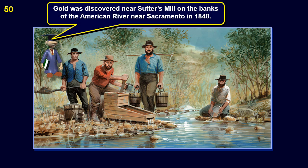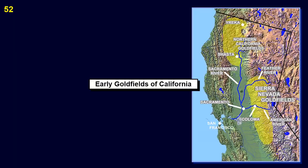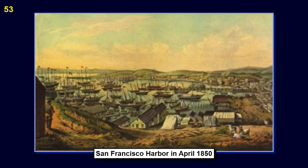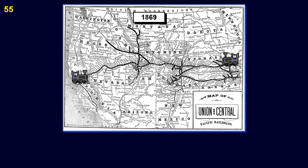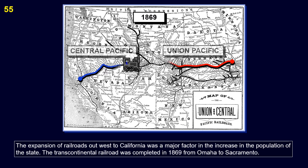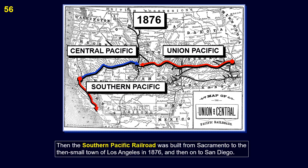Then gold. Gold was discovered near Sutter's Mill on the banks of the American River near Sacramento in January 1848. This shows the location of the early gold fields of California. This is the San Francisco harbor in April of 1850. The Transcontinental Railroad was completed in 1869 from Omaha to Sacramento. Then the Southern Pacific Railroad was built from Sacramento to the then small town of Los Angeles in 1876 and then on to San Diego.